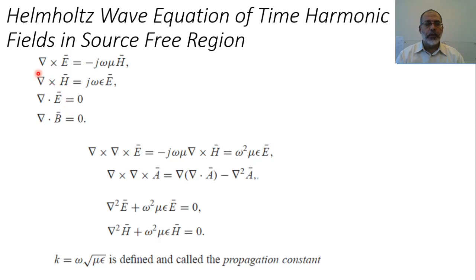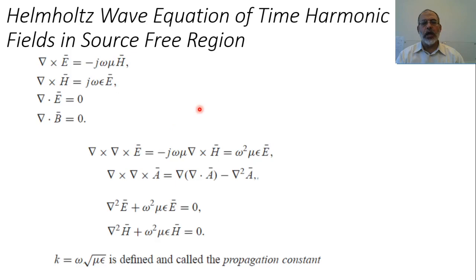These two equations represent the basis for the wave equation of electromagnetic waves. A time-varying magnetic field produces a rotating electric field around it, and this time-varying electric field in turn produces a rotating magnetic field. This mutual induction is the basis for the wave equation.